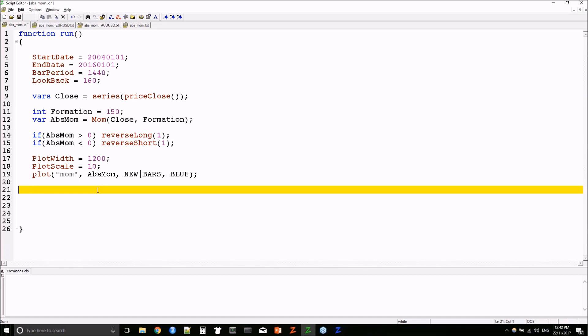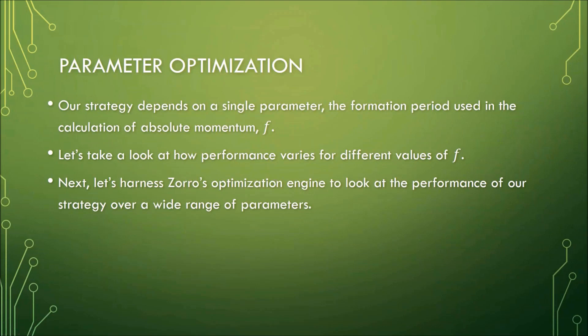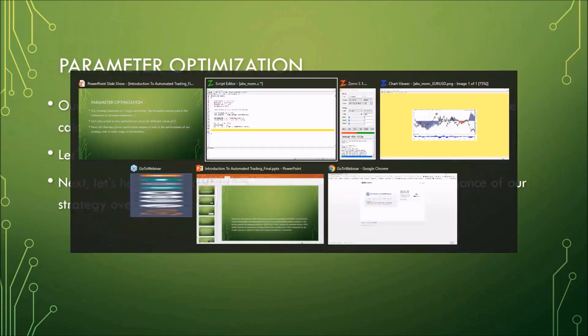The next thing I want to show you is parameter optimization. This strategy depends on a single parameter F, the formation period. We briefly looked at how performance varies across a few different values of that formation period. But the obvious question is: is there an optimal value and can we find it? To do that sort of analysis, Zorro has a powerful parameter optimization engine built in. I'll just briefly show you how that works.